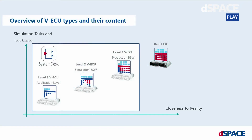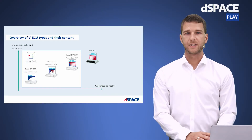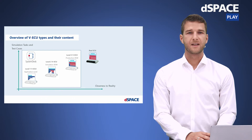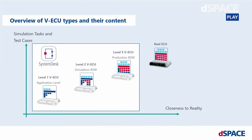First of all, I want to recap some basics of virtual electronic control units, so-called VECUs. You can use VECUs to perform realistic tests in software-in-the-loop testing, which can take place parallel to the development phases of an ECU. VECUs can be classified in three different levels. Level one VECUs are based on application software and come with the basic software generated by Systemdesk. Level two VECUs have a combination of basic software from the real ECU and generated SIL basic software from Systemdesk, in addition to the application software.